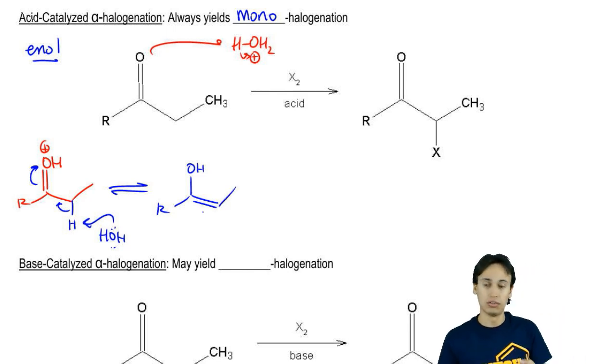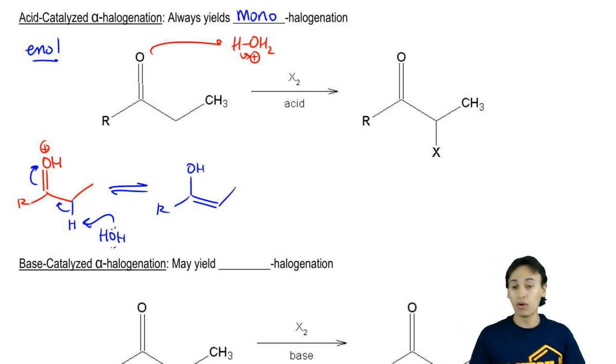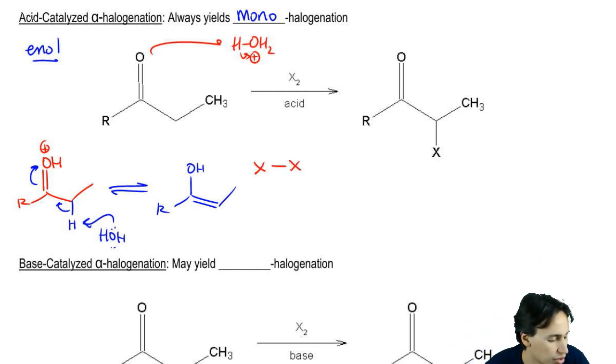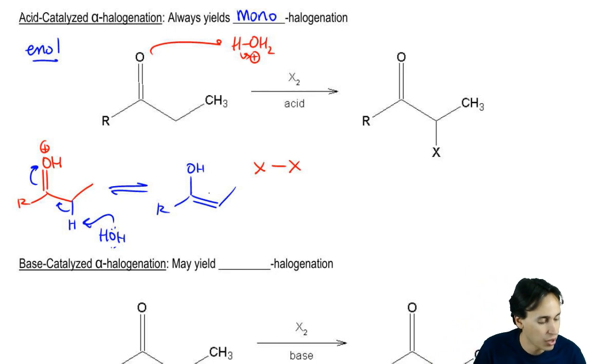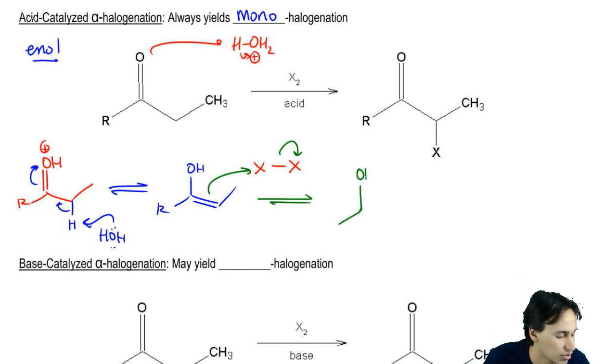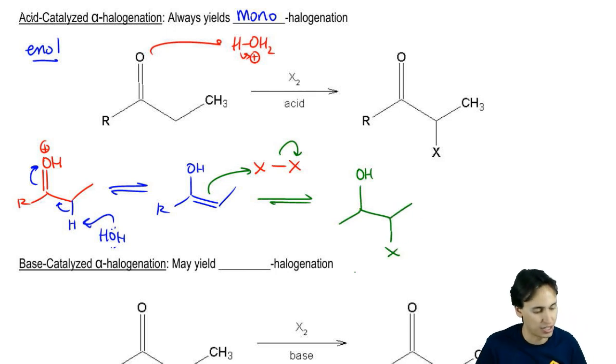This enol is now a pretty good nucleophile. I can use it to attack my diatomic halogen in a similar way, not really the same way but similar to another nucleophile. You would go ahead, grab one of the X's, kick off one of the X's and what you wind up getting is a molecule that looks like this, OH with now a new X here.